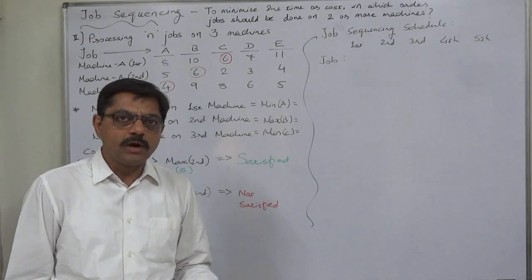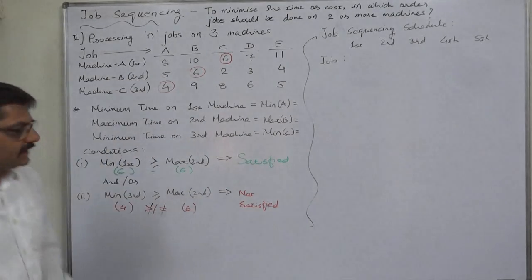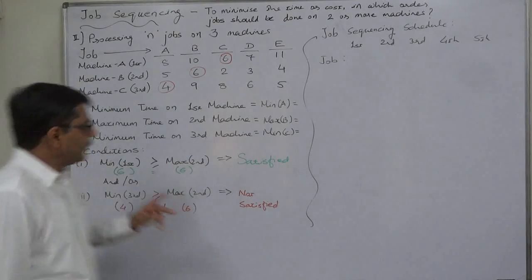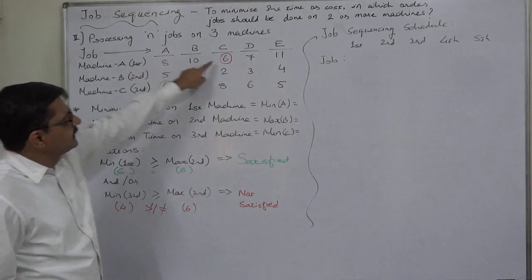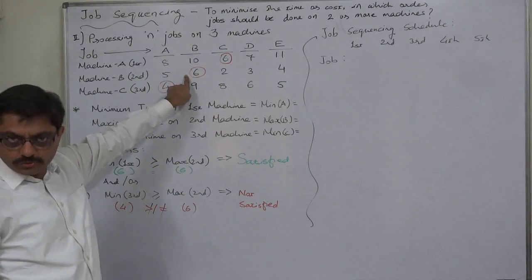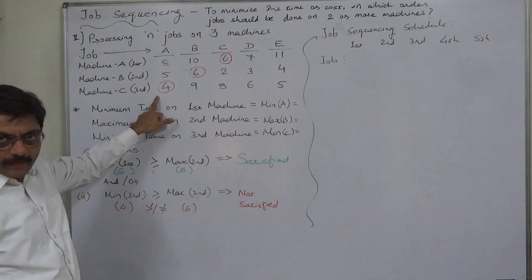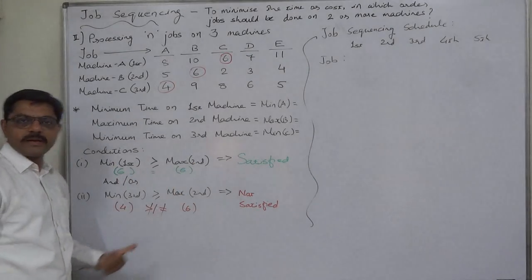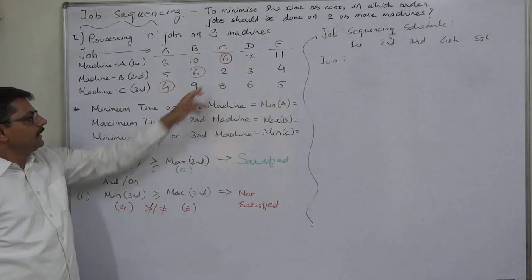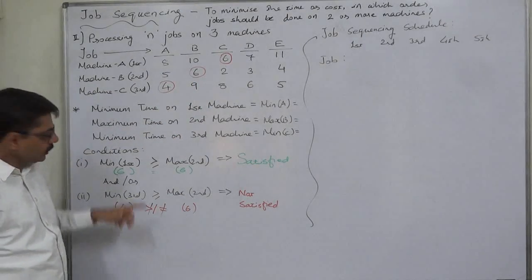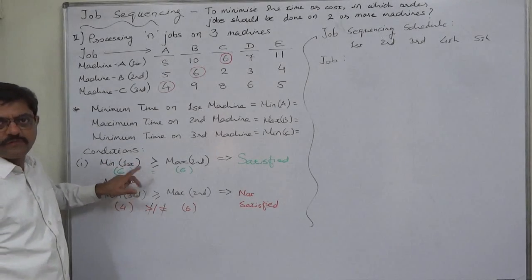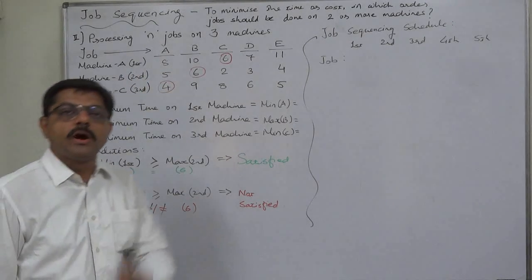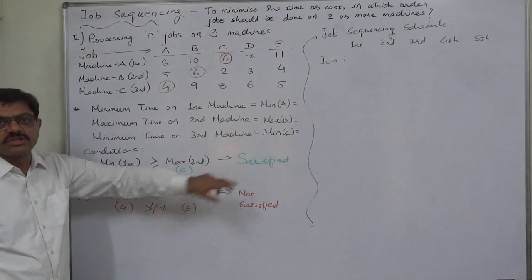Let us check in this case. We need to determine three values: minimum time on Machine 1, which is 6; maximum time on Machine 2, which is 6; and minimum time on Machine 3. For Condition 1: minimum time on Machine 1 should be greater than or equal to maximum time on Machine 2. Minimum time on Machine 1 is 6, and maximum time on Machine 2 is also 6 — so the equal-to sign applies. This condition is satisfied.